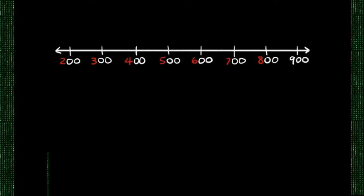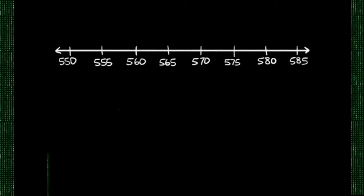That was a look at skip counting and patterns on the number chart. Let's take a look at this here—this is a number line. The problem is our number line doesn't have any numbers, so let's add some.